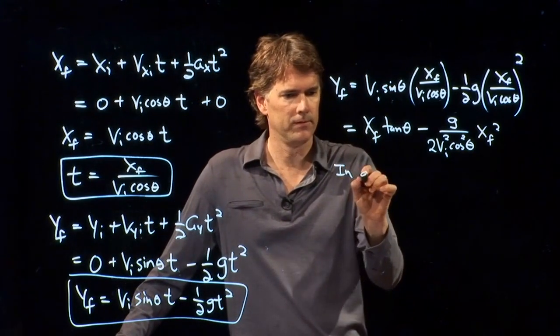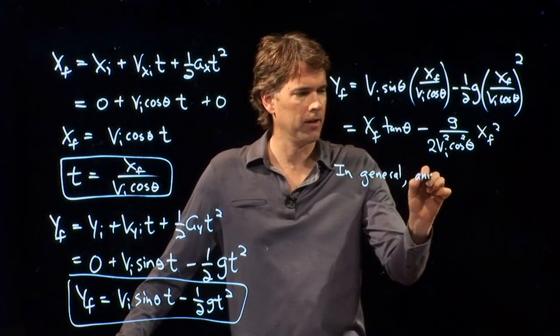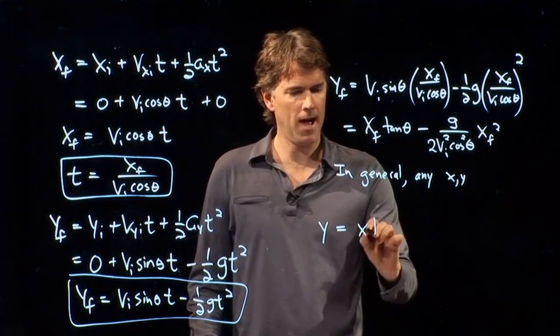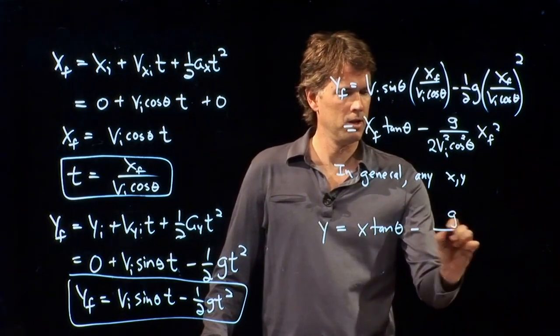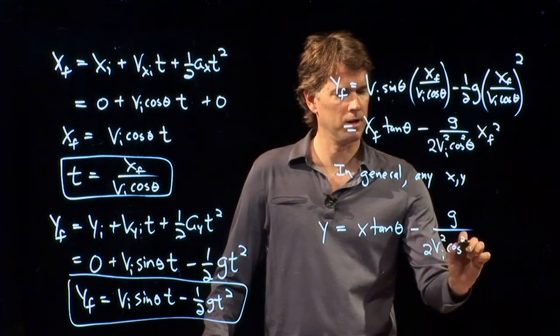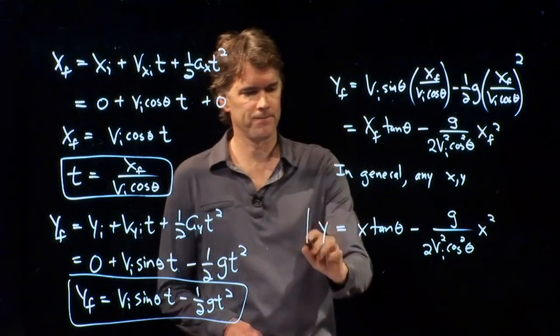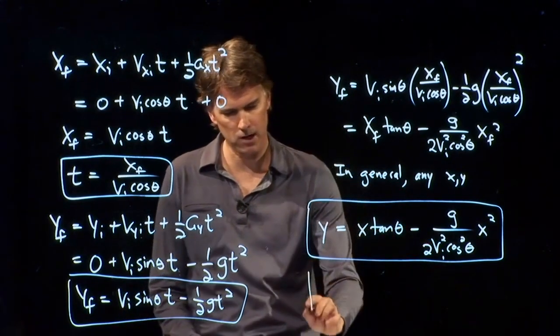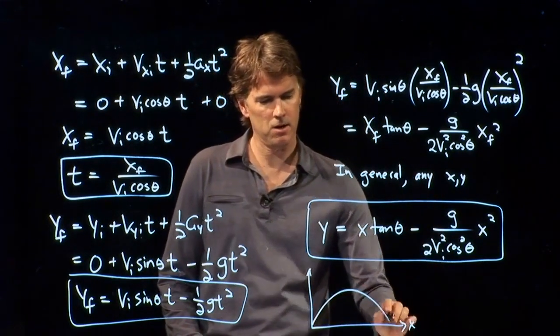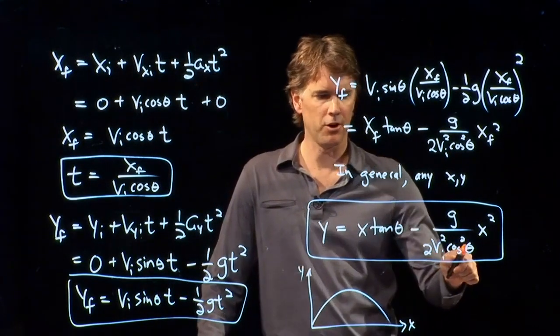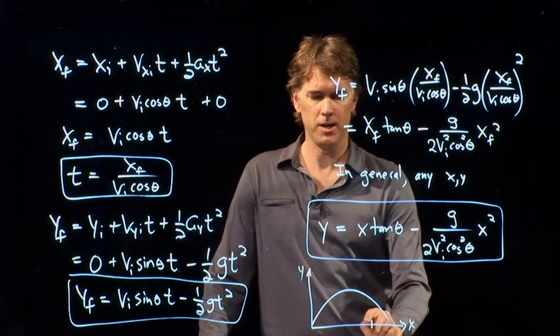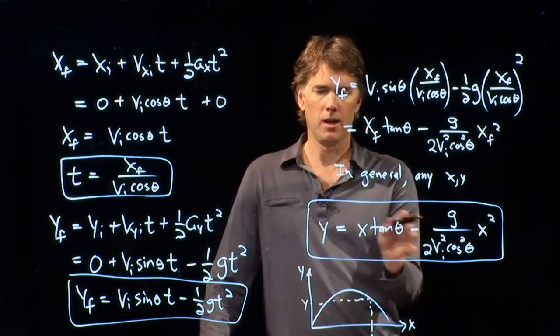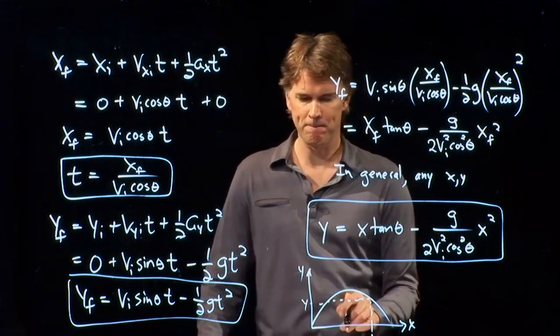So in general, for any x and y, we have an equation for the projectile that is the following. y is equal to x tangent theta minus g over 2 vi squared cosine squared theta times x squared. And this is a very nice equation because now there's no time in it anymore. It says that if I launch a projectile, all I need to know is the starting speed and the starting angle and everything else will be determined. I put in some x and I calculate exactly what y corresponds to for that particular x. And this equation is satisfied over that whole parabola.